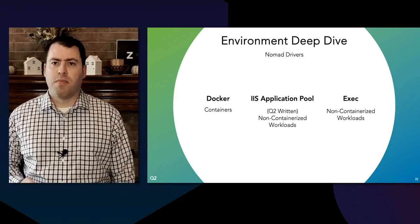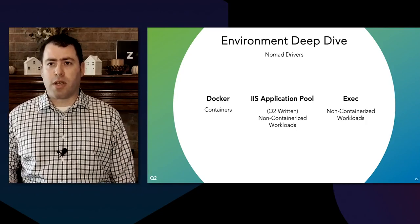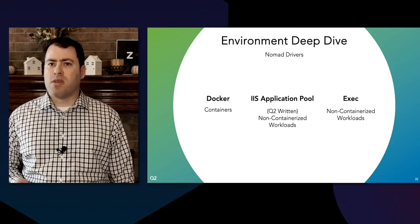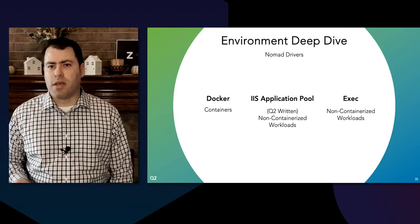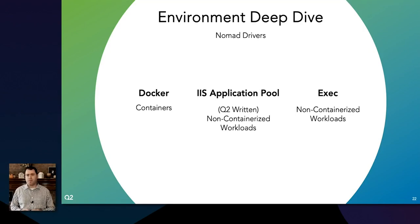One of the cool things about Nomad is you're not limited to running just containers. There are different task drivers available like Docker, Podman, Firecracker, and even straight executables. We use the Docker and exec drivers, plus we wrote our own Microsoft IIS app pool driver. This lets us run a huge number of Docker containers on Linux VMs, and for Windows VMs we run executables and IIS app pools directly on the VMs. We tried starting off with Docker on Windows but had too many challenges around stability and loss of density. With the app pool driver, we maintain a fleet of VMs running IIS plus the Nomad and Consul agents, and when we submit a job the artifact stanza pulls down the app pool content and starts it up within IIS. Our next steps are moving away from IIS-bound applications to straight executables as we move to .NET Core.